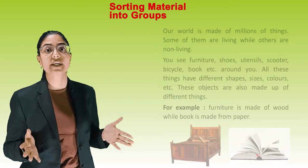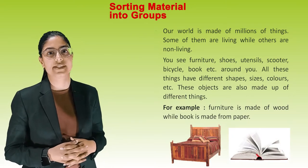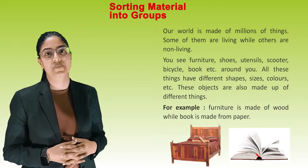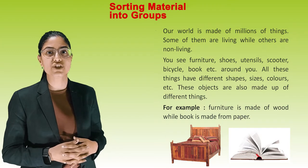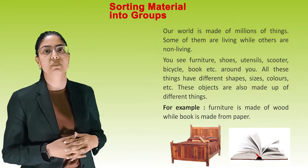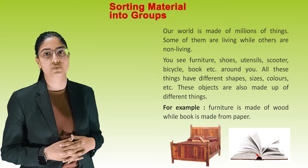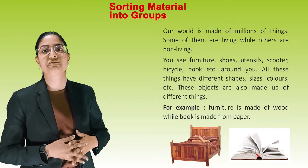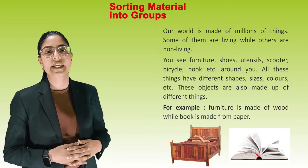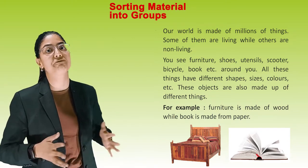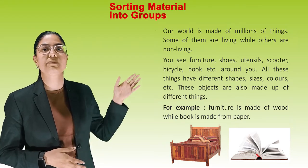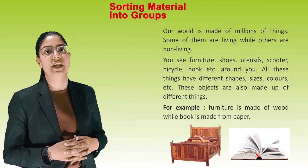Our world is made up of millions of things. Some of them are living while others are non-living. You see furniture, shoes, utensils, scooter, bicycle, book, etc. around you. All these things have different shapes, sizes, colors, etc. These objects are also made up of different things. For example, furniture is made up of wood while books are made up from paper.